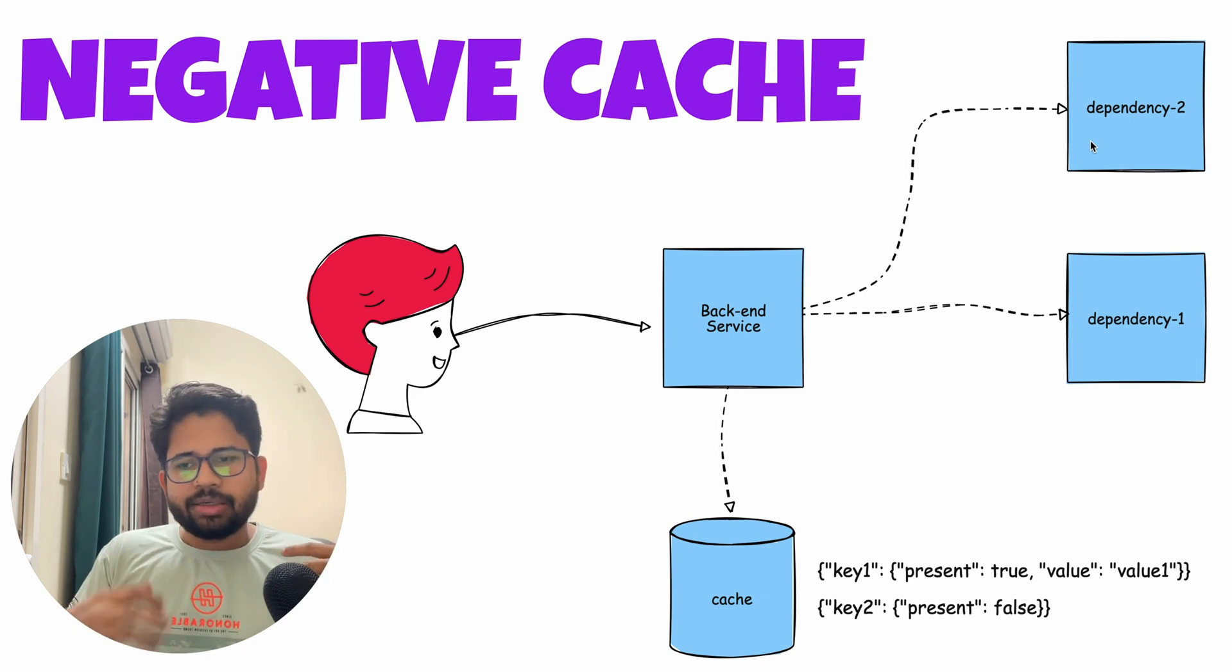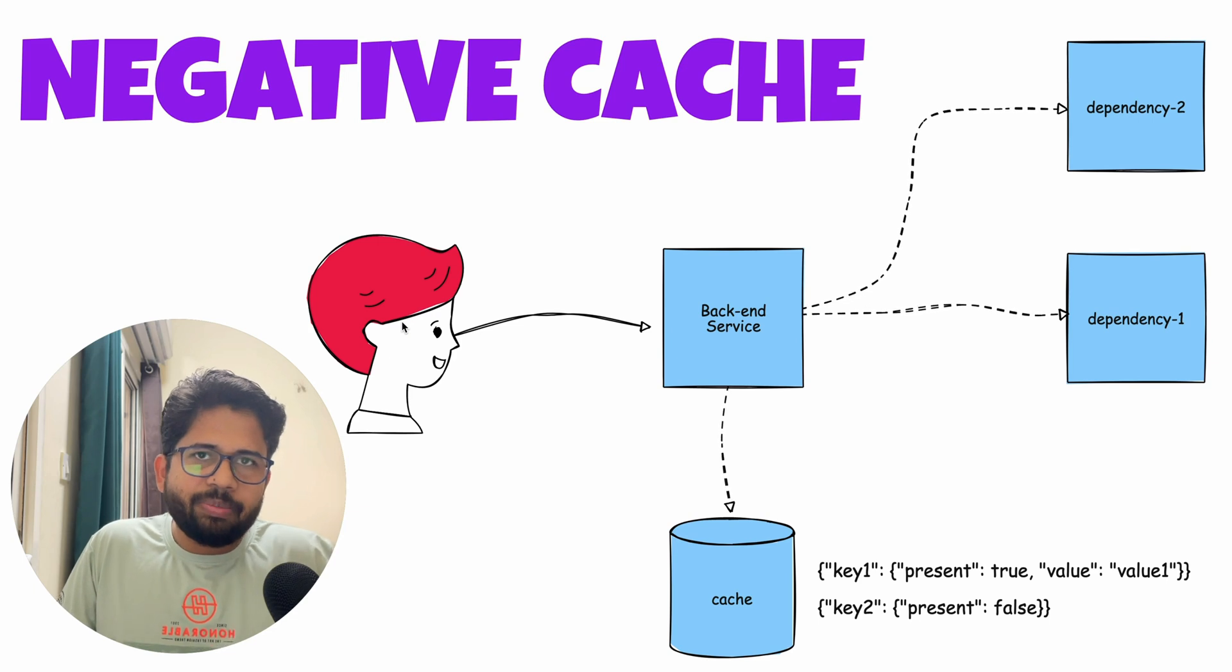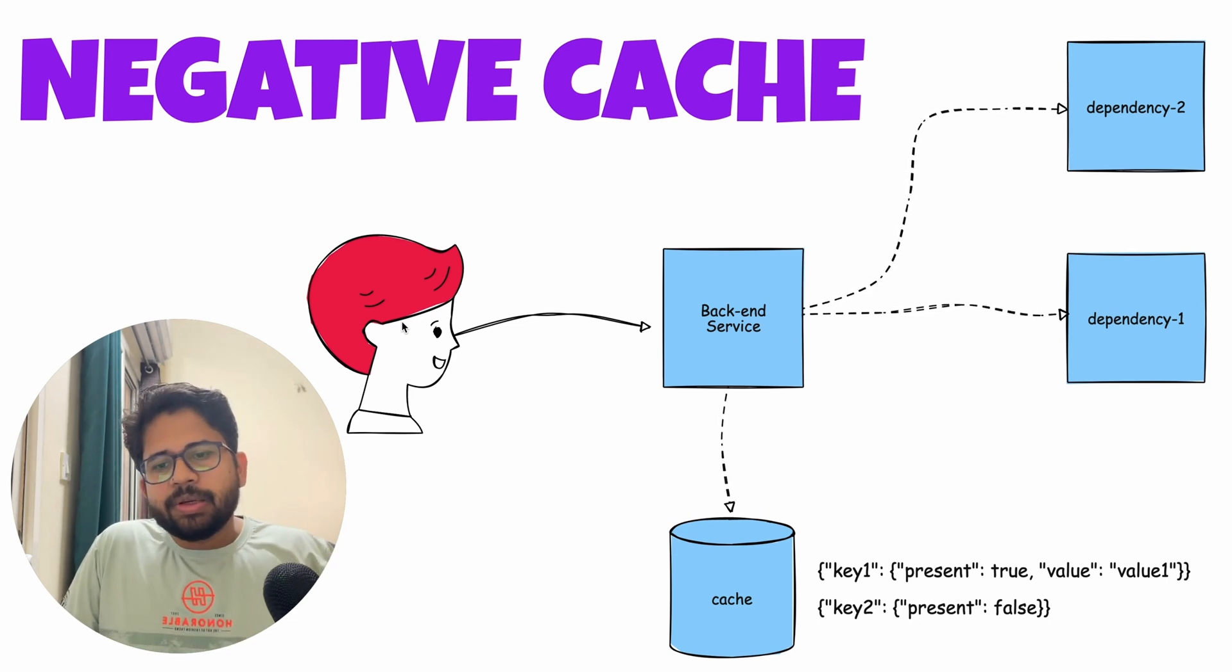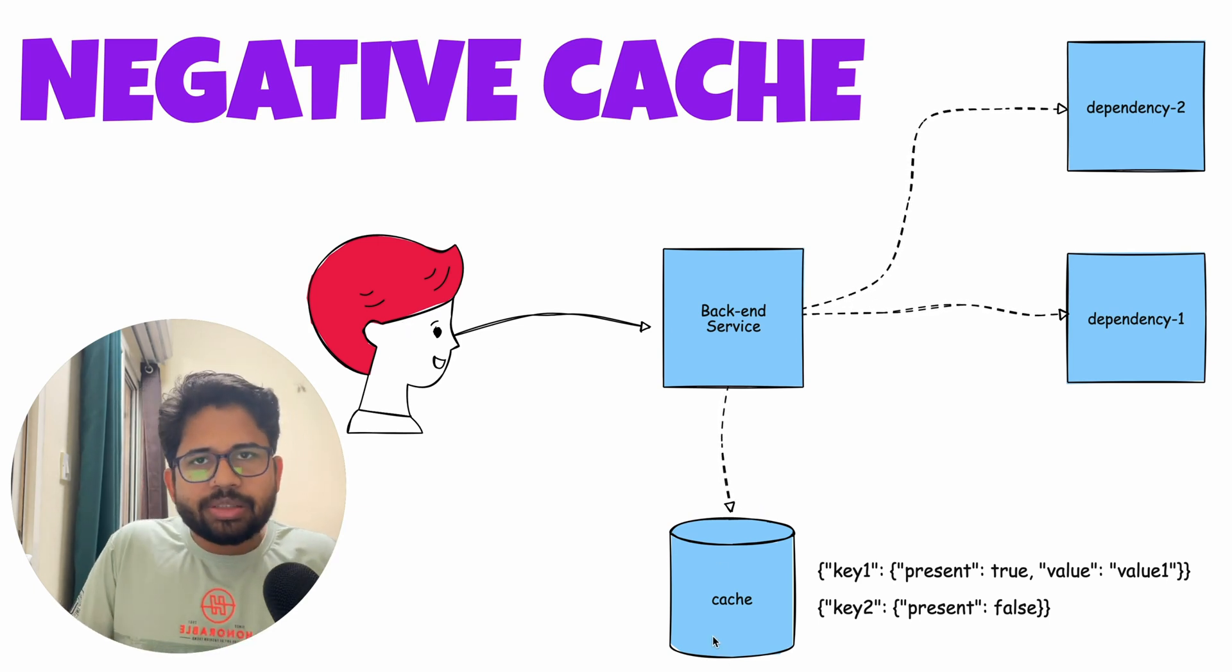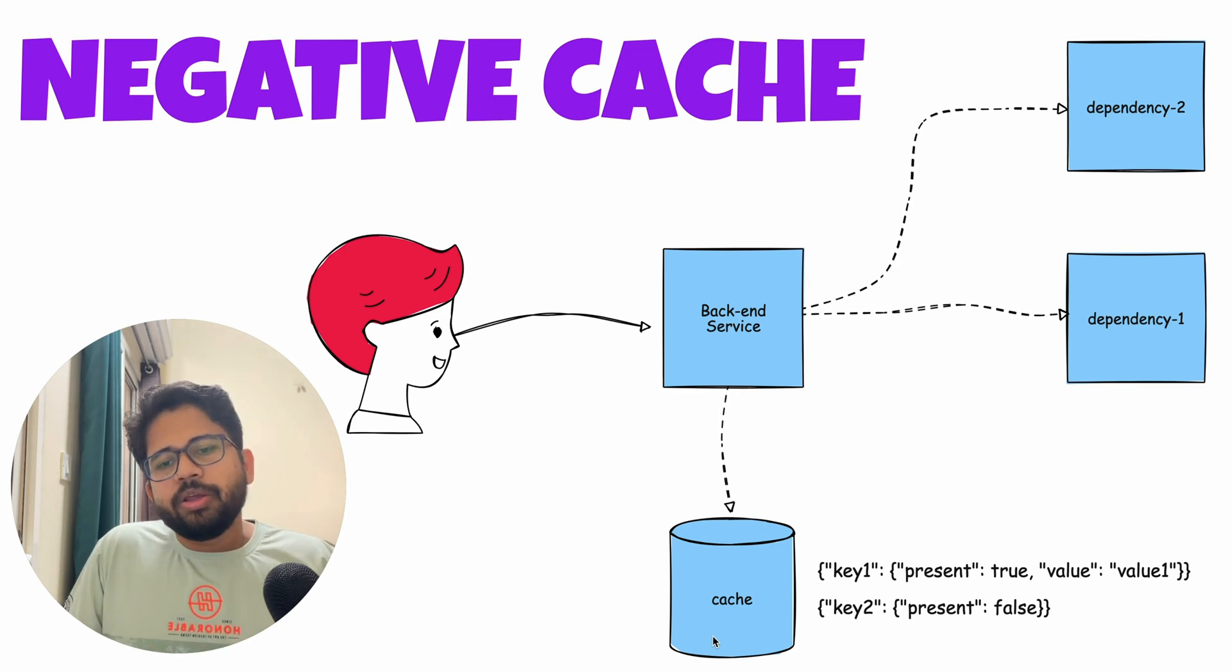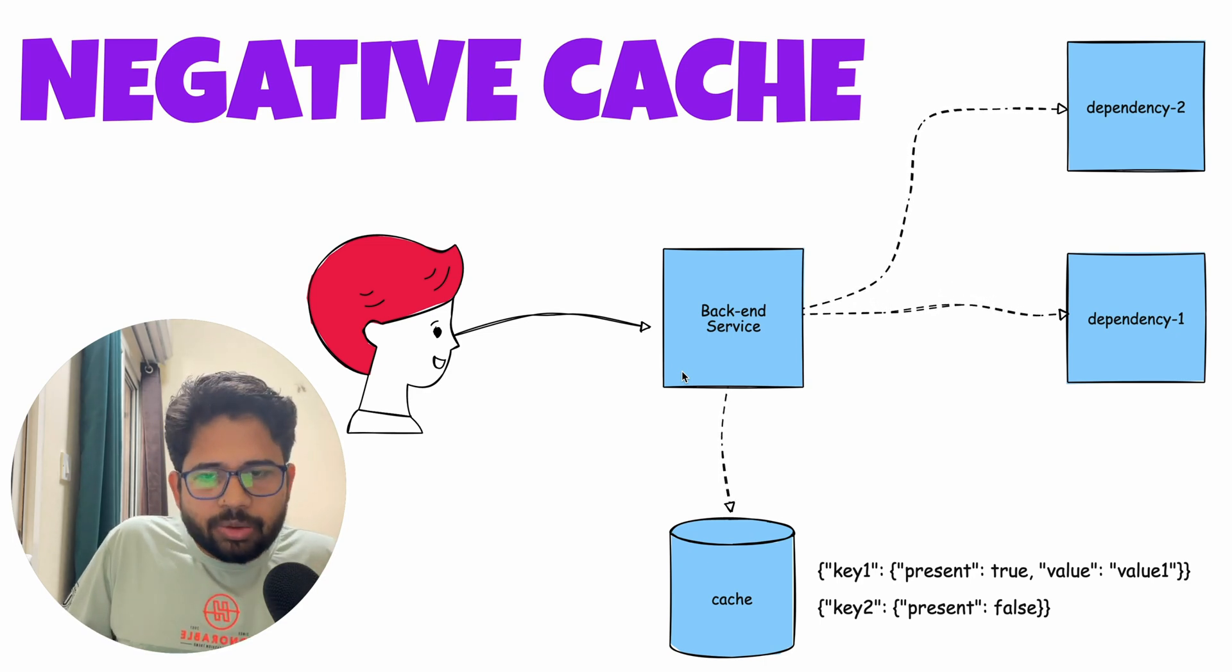So in those cases, the problem is that because of a bad request, a person making a request on a particular day which is not available, you won't be caching the data. Now, since you won't be caching the data, the next person who calls your backend service will again make the same call. So in this way, you will keep on making calls for the negative scenarios as well, which is not a good case.